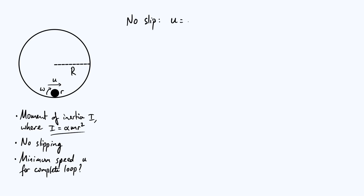The no-slip relationship is u = rω. That condition comes from the fact that there cannot be any relative velocity between the point on the rolling object in contact with the surface and the surface itself. Now one of the differences between this problem and the particle variation we looked at last time is that our object now has two contributions to its kinetic energy: translational kinetic energy and rotational kinetic energy. Let's think about how to write down an expression for the total kinetic energy, starting with the initial kinetic energy at the bottom.